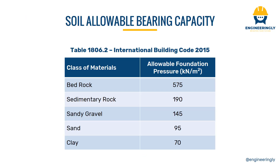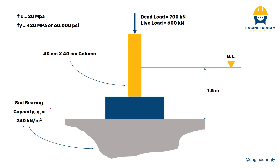Regarding soil bearing capacity, as you can see in this table, different types of soils have different allowable foundation pressures in kilonewtons per meter squared. Bedrock allows 575, sedimentary rock 190, sandy gravel 145, and so on. In this example, the bearing capacity is given as 240 kilonewtons per meter squared. Bear in mind that tests such as the California Bearing Ratio (CBR) test are performed to obtain this value. With all this information, we will start designing the square column footing.